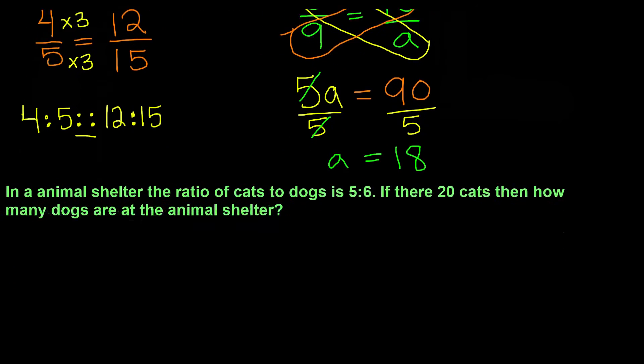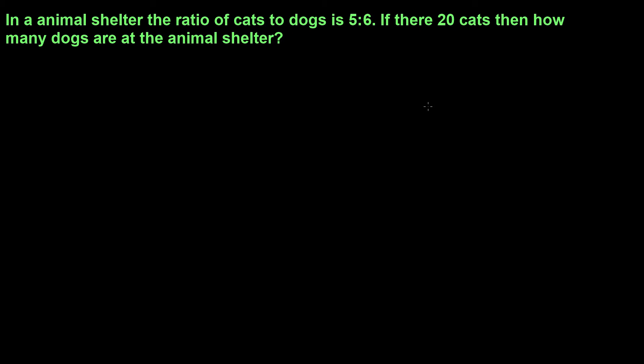Now let's solve a word problem. In an animal shelter, the ratio of cats to dogs is 5 to 6. If there are 20 cats, then how many dogs are at the animal shelter? They're telling me the ratio of cats to dogs is 5 to 6. If there are 20 cats, how many dogs are there? Since we don't know the number of dogs, we can represent this by a variable, which can be C.